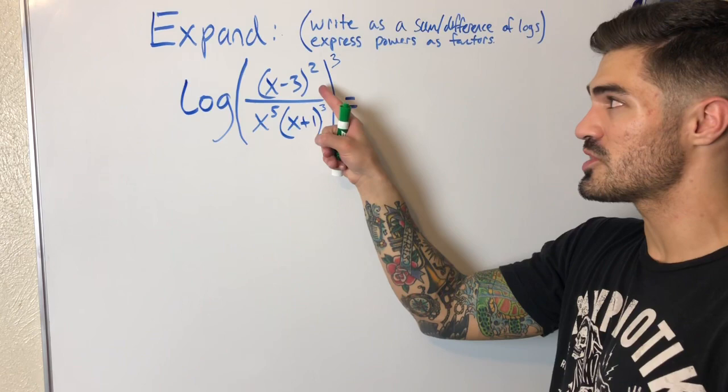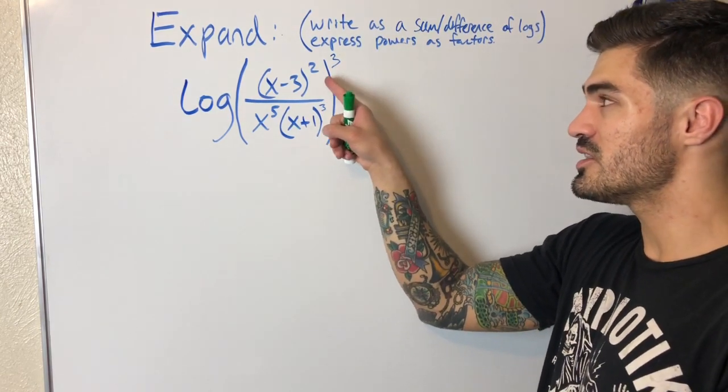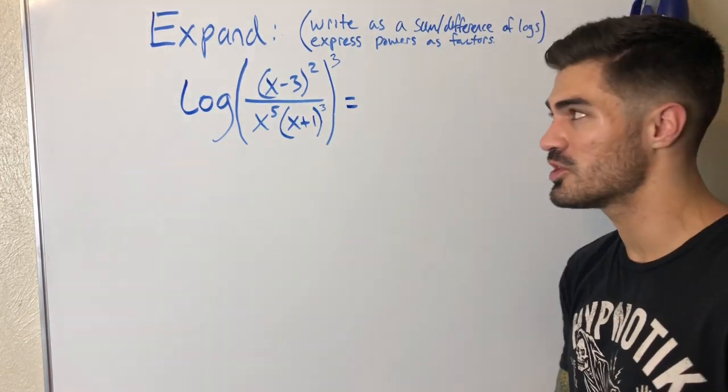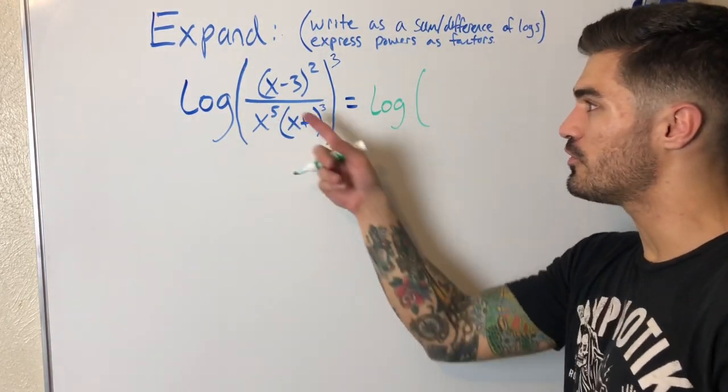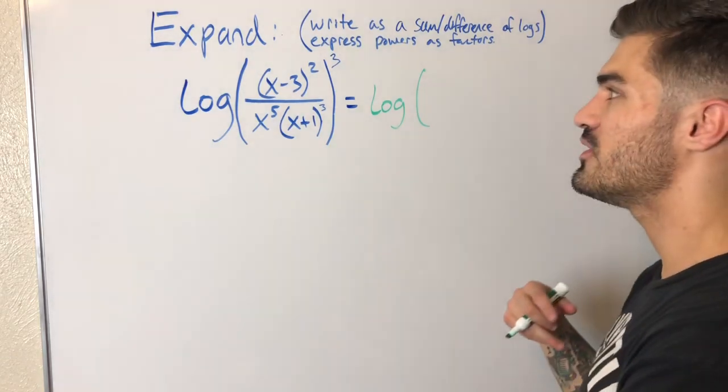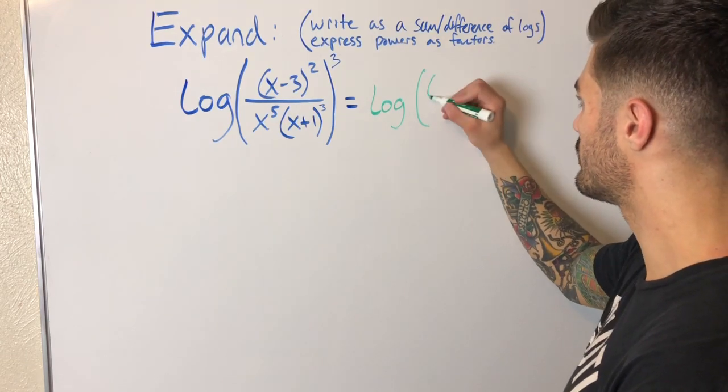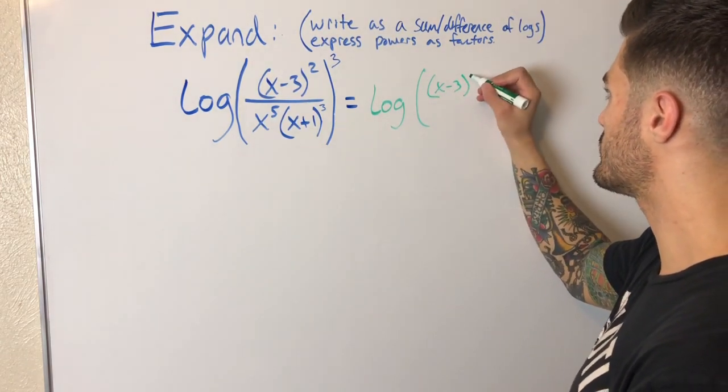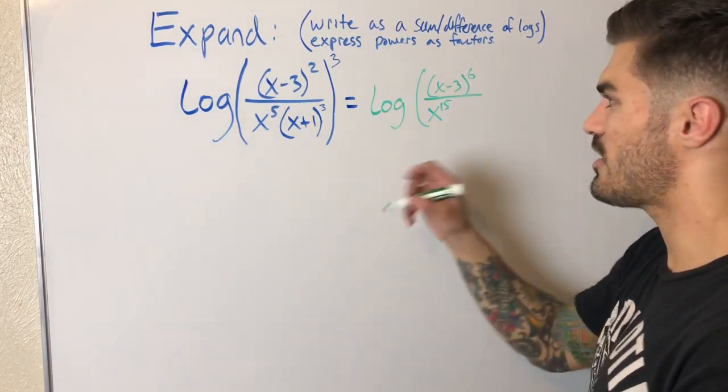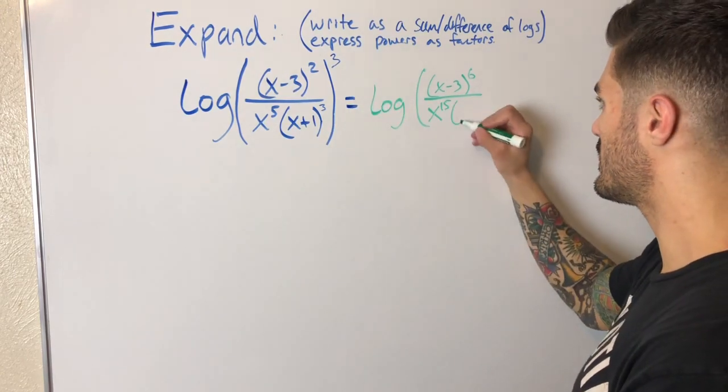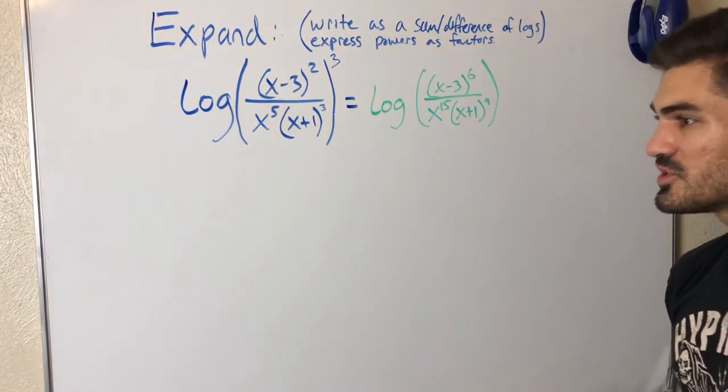So what I like to do is I like to use exponent rules, a power to a power, right, and multiply. But I may have to make sure this three gets multiplied to that two, that five, and that three. So I'm going to go ahead and do that now. I rewrite this as log, and again you could bring the three out in front, you just got to be real careful when you start splitting this up that three's being multiplied to everything and you're going to multiply everything by three at the very end. So I'm going to do it this way: x minus three, whoops, x minus three, two times three, that's six, and then I have five times three, that's x to the fifteenth power, x plus one, let's see, three times three, that is nine, x plus one to the ninth.